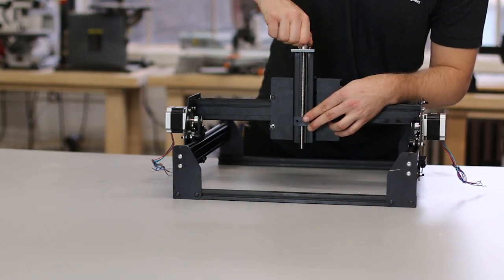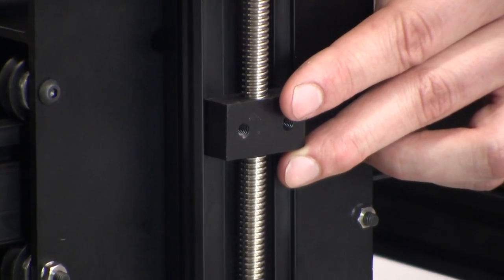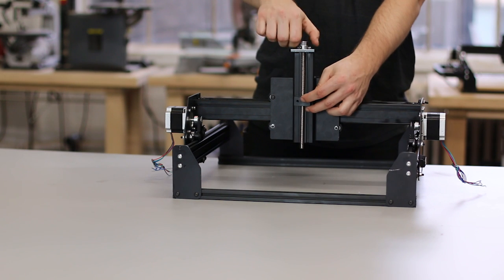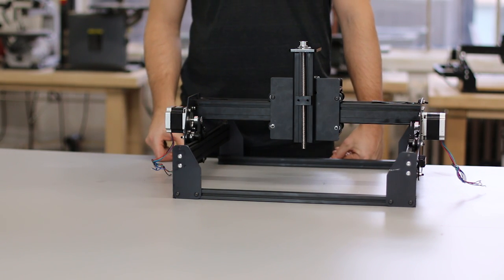Next, we'll thread the Delrin nut up from the bottom of the Acme rod by turning the pulley with your fingers and keeping constant upward pressure on the Delrin nut as it traverses the rod. You can stop about halfway up.